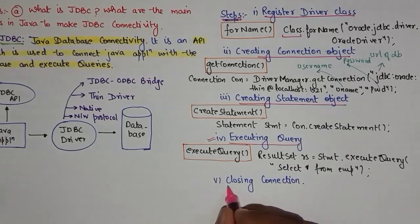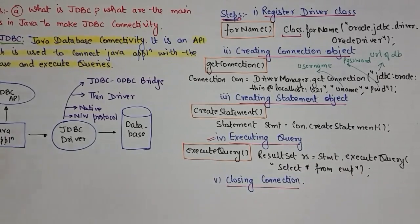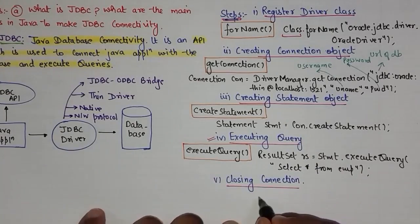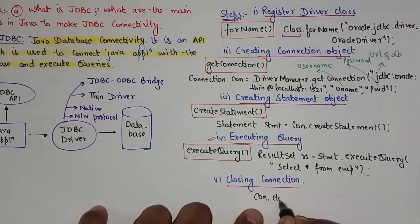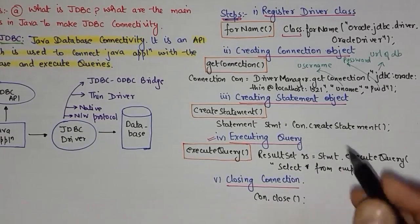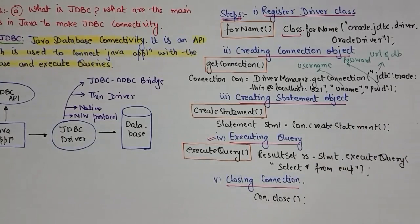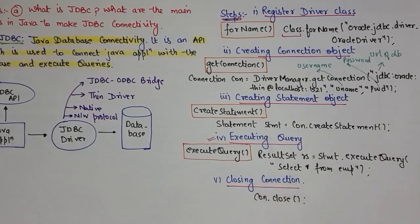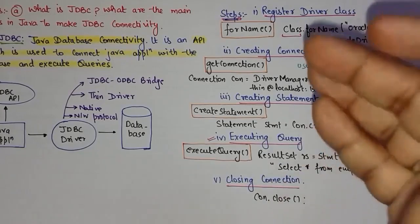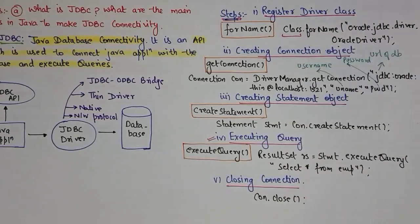The final and simplest step is closing the connection using 'connection.close()'. You can also close the statement and result set, but closing the connection is the most important. These were the five JDBC steps. This is all for this particular video lecture. Thank you for watching — please subscribe to my YouTube channel for more such tutorials.